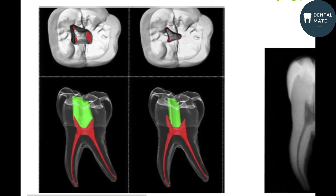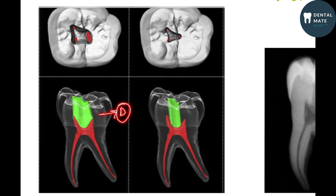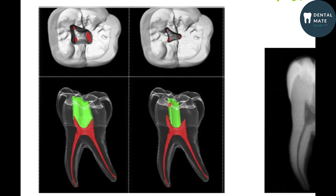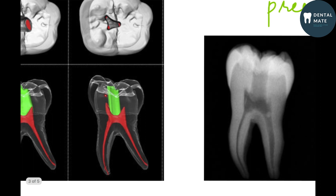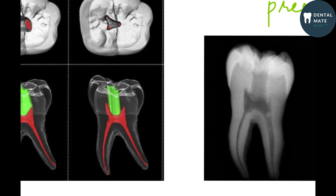What is the difference between a conservative and a traditional access cavity preparation? In a traditional access cavity preparation, we do the complete de-roofing of the pulp chamber. We gain a straight-line access to the pulp horns. For gaining straight-line access, there is complete de-roofing of this area. But in a conservative access cavity preparation, what we do is we try to preserve this dentine area and try to partially de-roof the pulpal roof.